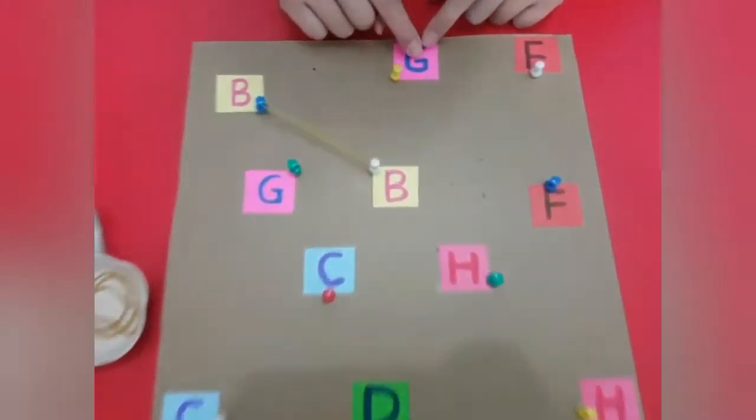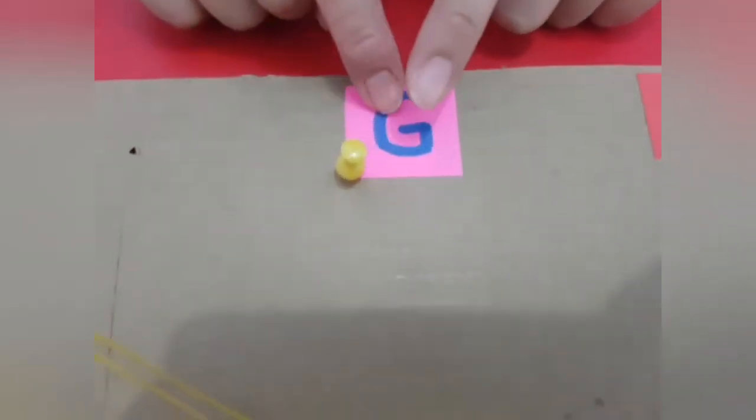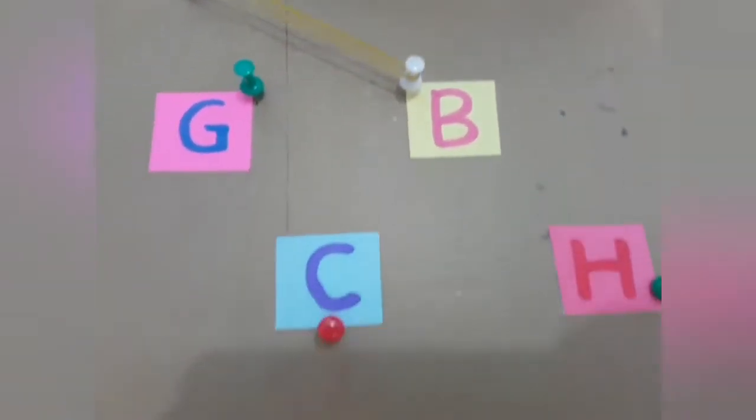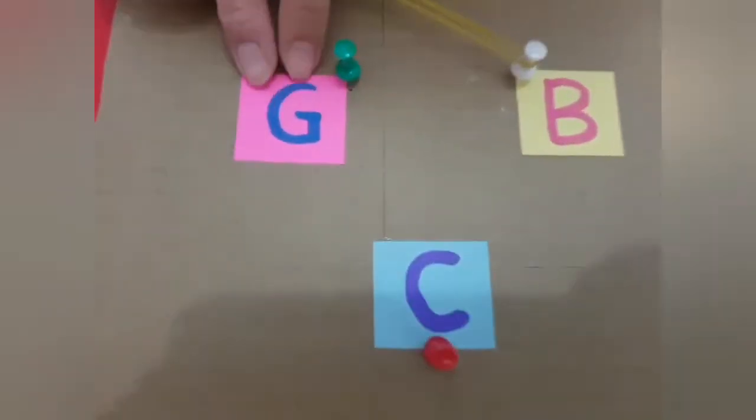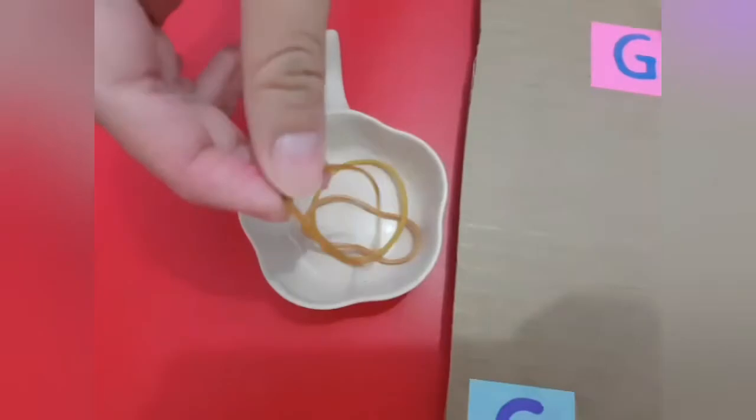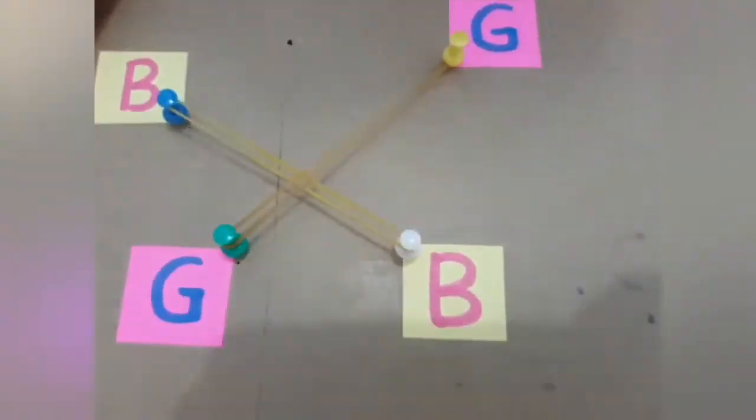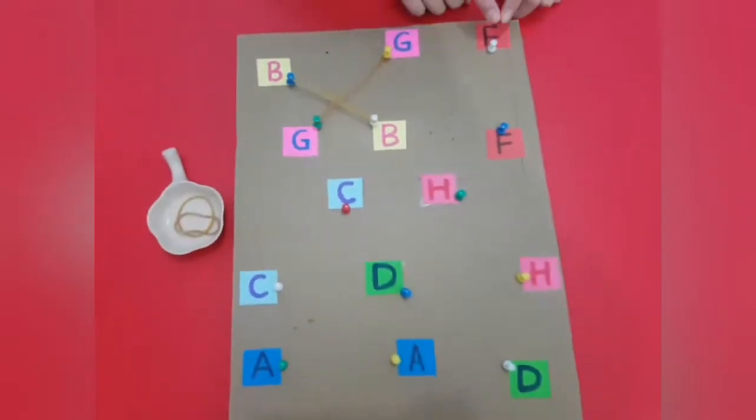Now G. Where is G? Let's find it. Yes, this is G. Then Miss pulls the rubber band and matches it to the letter G.